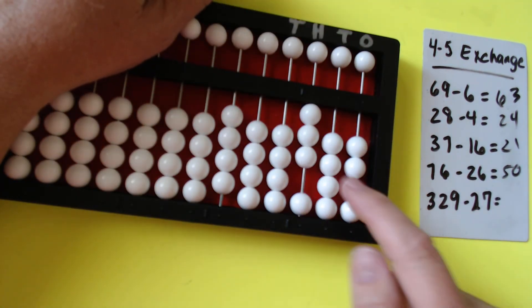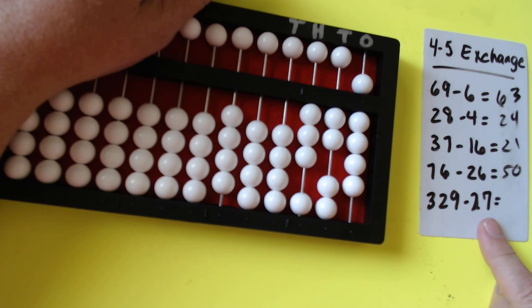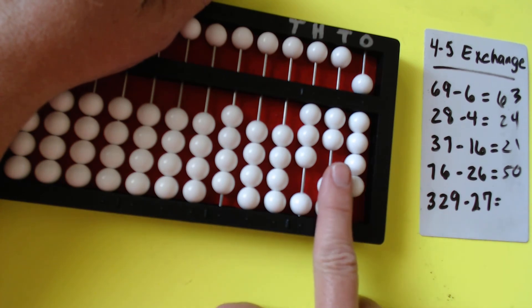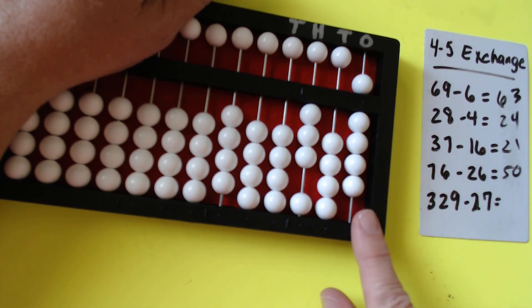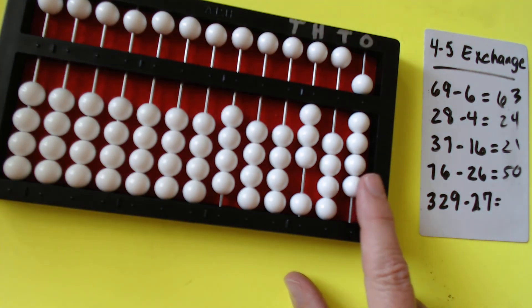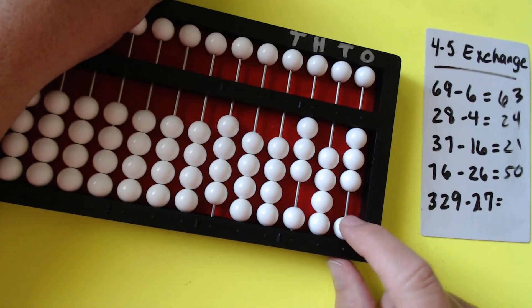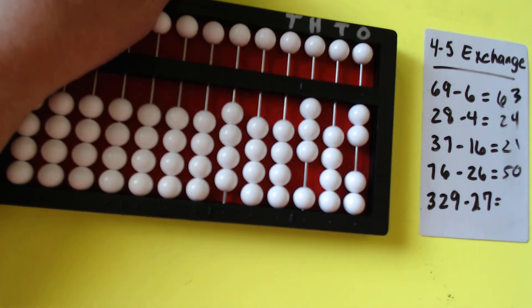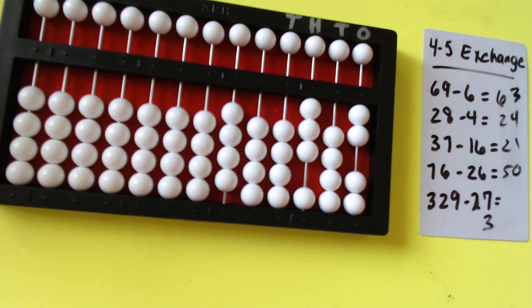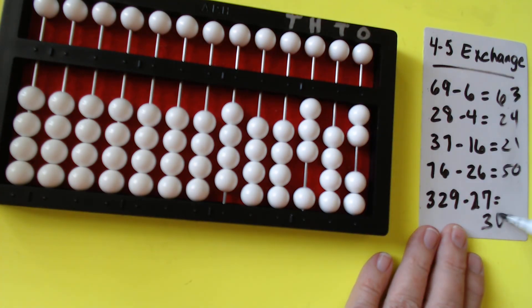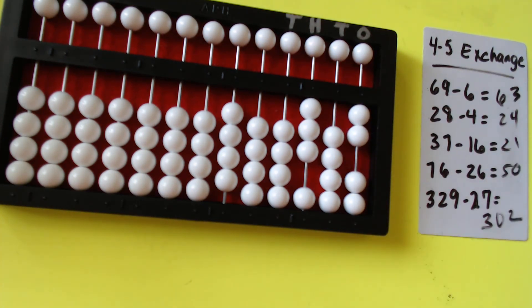329 minus 27. Again, the 20 is easy, no borrowing. And then minus 7: 1, 2, 3, 4, 5, 6, 7. So that gives us an answer of 300, and we just put a 0 here, and 2. Okay, hope that helps, guys.